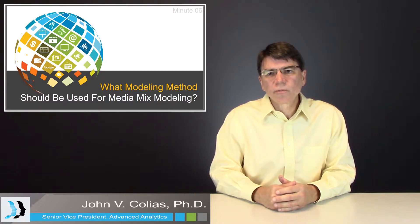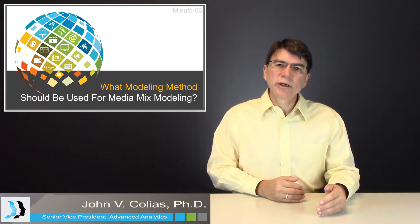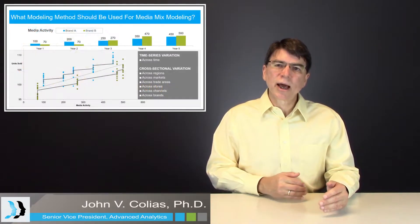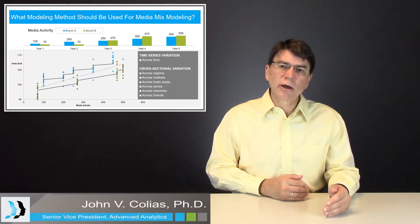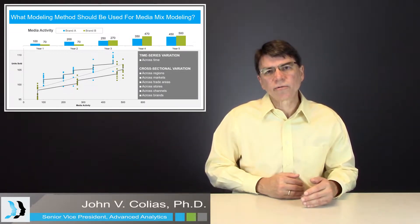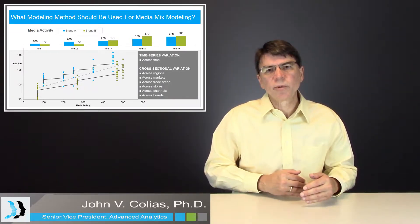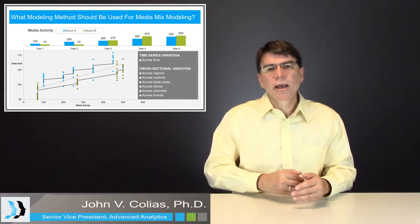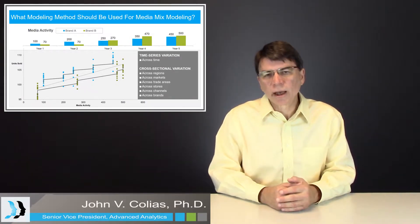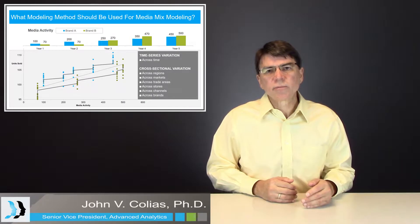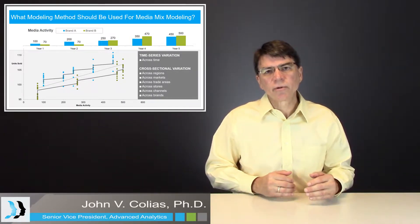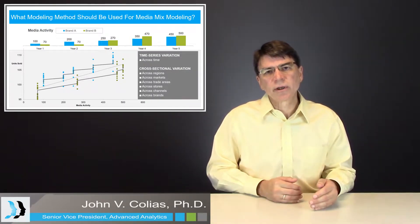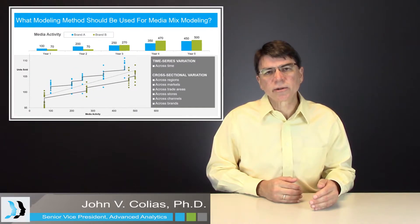To begin with, it's very important to decompose the time series variation — the across-time variation — from the cross-sectional variation that would be across brands, across markets, across regions, for example. And the reason it's important to decompose it is to get an accurate measure of the media activity itself on unit sales.